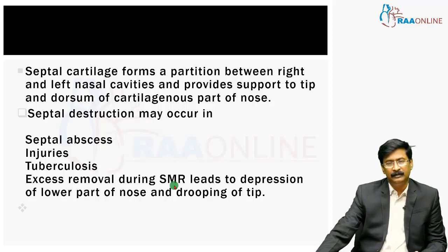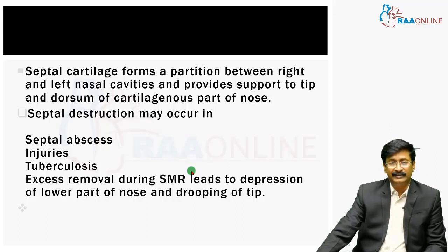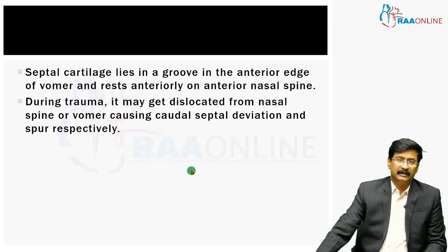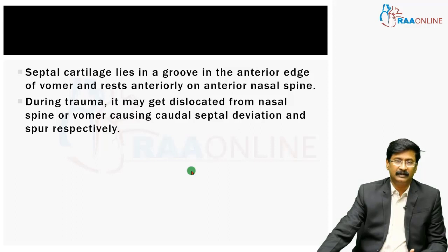It can also occur with injury to the nasal cartilage by excessive removal of septal cartilage during a submucous resection surgery, which can cause depression of the anterior part of the nose or drooping of the tip. The septal cartilage lies in a groove in the anterior edge of the vomer and rests anteriorly on the anterior nasal spine. During trauma, it may get dislodged from the anterior spine or from the vomer, causing a caudal septal deviation. Sometimes a sharp angulation can also form a sharp spur anteriorly.